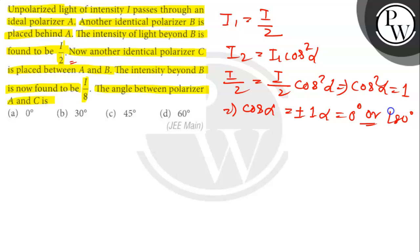Now, when polarizer C is placed between A and B, if C makes angle theta with A, it makes angle theta with B also. So when light passes C, intensity I3 equals I by 2 cos square theta.